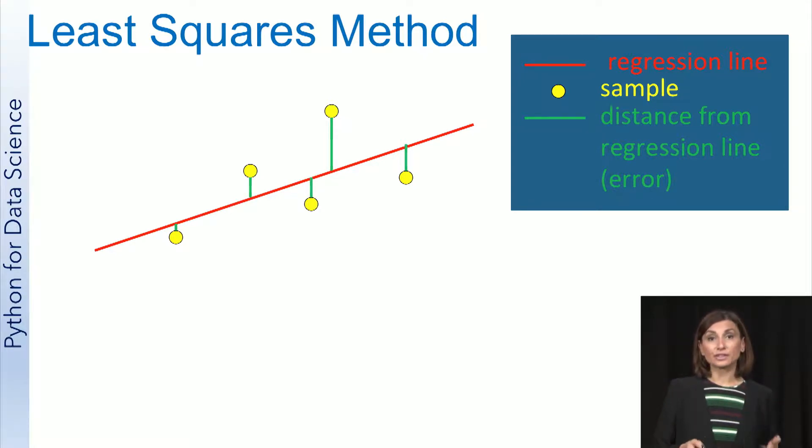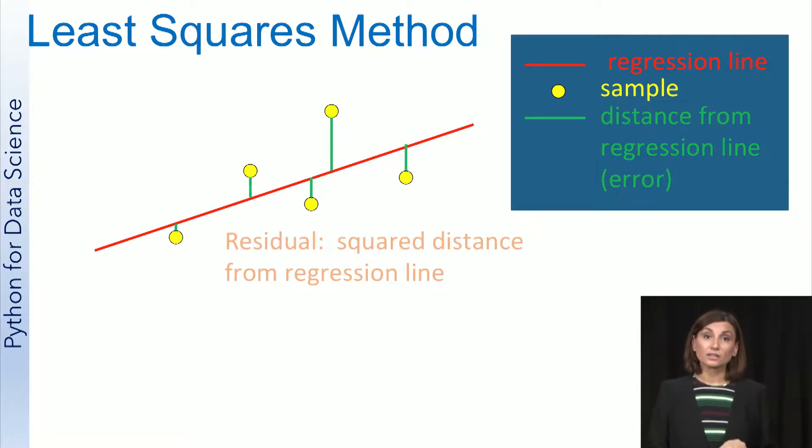Each green line indicates the distance of each sample from the regression line. So the green line represents the error between the prediction, which is the value of the red regression line, and the actual value of the sample. The square of this distance is referred to as the residual associated with that sample. The least squares method finds the regression line that makes the sum of the residuals as small as possible.